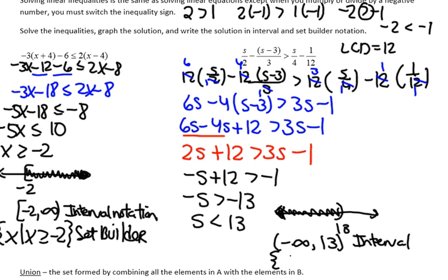Set builder notation: all s such that s is less than 13.